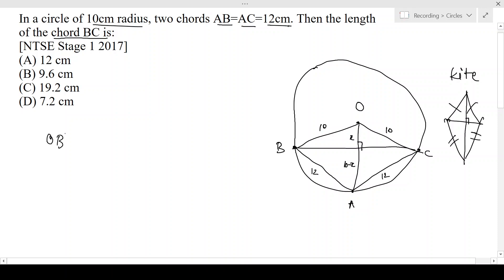That is OB square is equal to, let's name this part over here Q, OQ square plus BQ square. So OB that is 10 square gives us BQ square equals 10 square minus X square. This is our equation number 1.